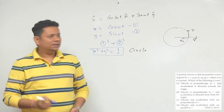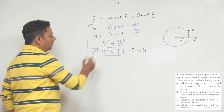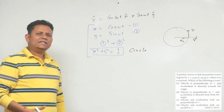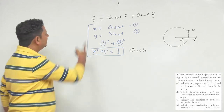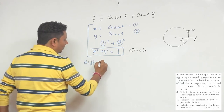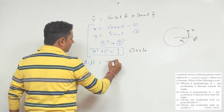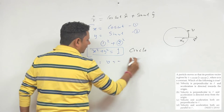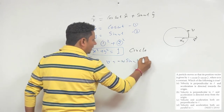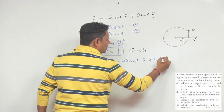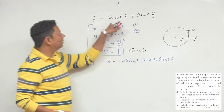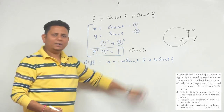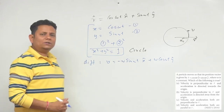Now for method number 2: if you understand the trajectory equation from the exam, you can arrive at the answer quickly. Just in case it's not clear, we can differentiate the position vector. Differentiating r gives us velocity: v = −ω sin(ωt) x̂ + ω cos(ωt) ŷ.